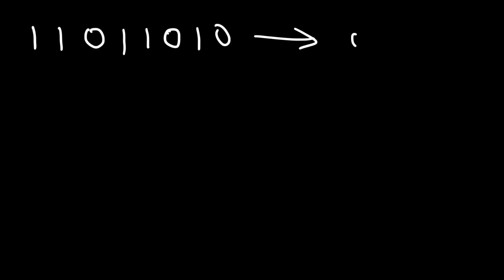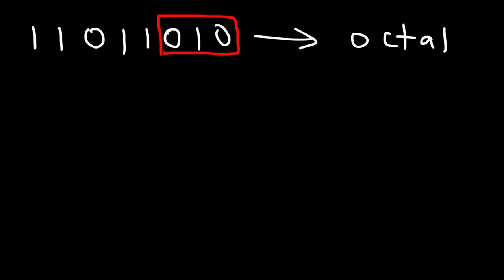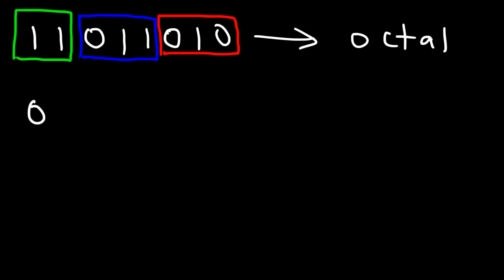For one more example, let's say we have the binary number one one zero one one zero one zero. Go ahead and convert it into an octal number — feel free to pause the video. Separating into groups of three from right to left: the first group is zero one zero, the second is zero one one, and the last group is one one, so we add a zero to make zero one one.